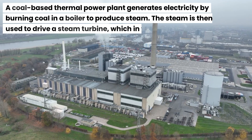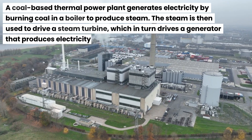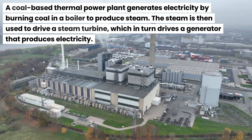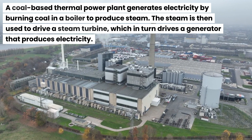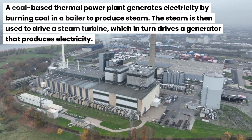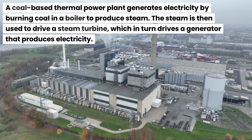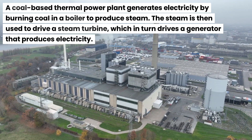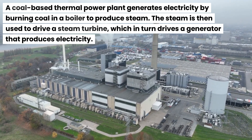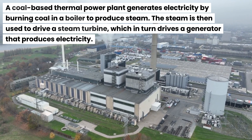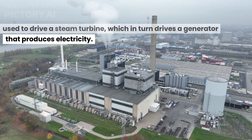A coal-based thermal power plant generates electricity by burning coal in a boiler to produce steam. The steam is then used to drive a steam turbine, which in turn drives a generator that produces electricity.